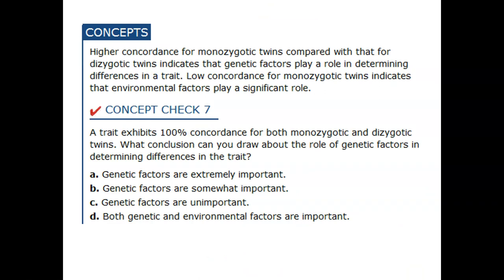So let's see how much sense this makes to us — here's a concept check. A trait exhibits 100% concordance for both mono and dizygotic twins. What conclusions can you draw about the role of genetic factors in determining differences in that trait? Is genetics extremely important, somewhat important, not important, or is it both genetics and the environment playing a role?